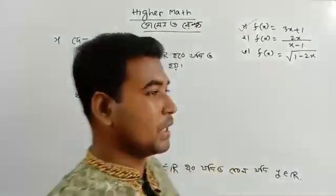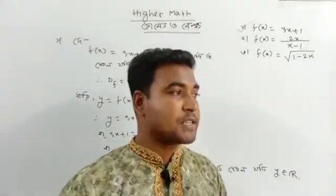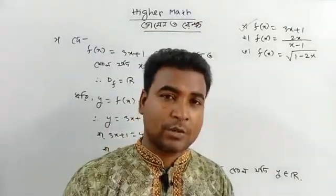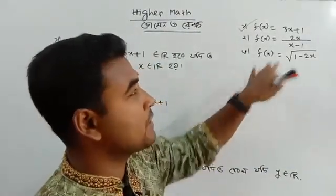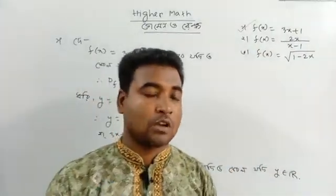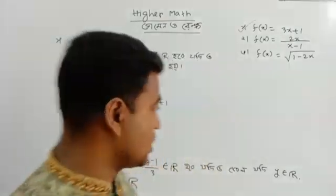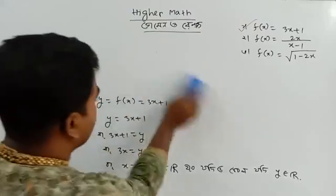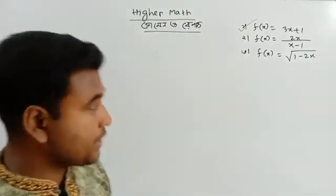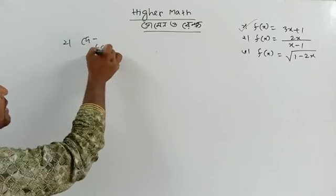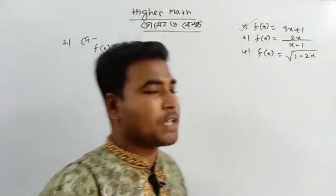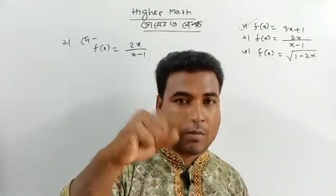If you haven't seen this class, you can see it now. We have seen the domain range. Here we are going to look at two numbers — the second function: f(x) = 2x/(x − 1). Let's see what is happening.